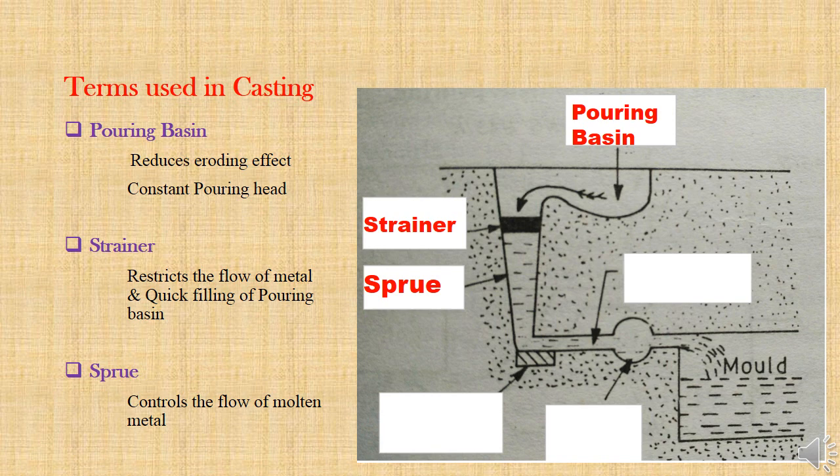Here we are seeing pouring basin, strainer and sprue through which the molten metal passes to reach the mold. Pouring basin is a small funnel shaped cavity at the top of the mold into which the molten metal is poured. Without pouring basin, if we pour the molten metal straight into the sprue, it may cause an eroding effect and constant flow will not be there. The strainer is like a screen with many holes, utilized to maintain constant flow conditions and mainly restricts the flow of slag into the mold.